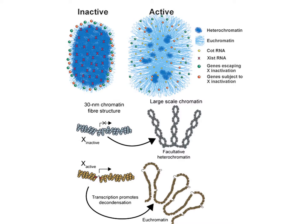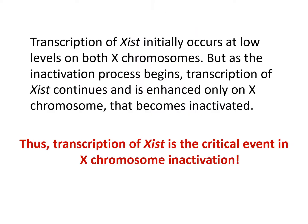Transcription of XIST initially occurs at low levels on both X chromosomes. But as the inactivation process begins, transcription of XIST continues and is enhanced only on the one X chromosome that will become inactivated. Thus, transcription of XIST is the crucial event in chromosome inactivation. The chromosome which contains active XIST will become inactive.